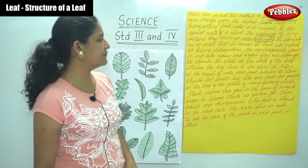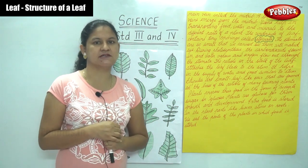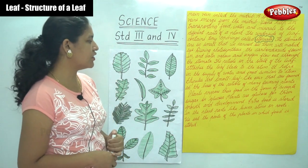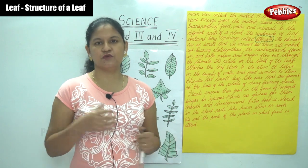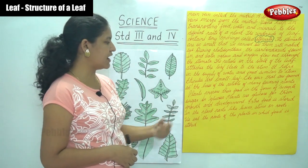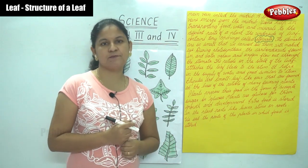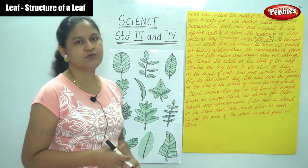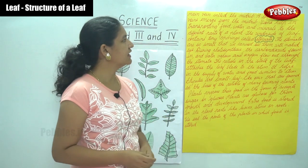Stipules are small leaf-like pairs found at the base of the petiole of many flowering plants. Plants prepare their food in the form of simple sugar or glucose, and use glucose for their growth and development. Extra food is stored in plant parts like the leaves, stems, or roots — for example, carrots and radishes store food in their roots. We eat the parts of the plant in which food is stored.